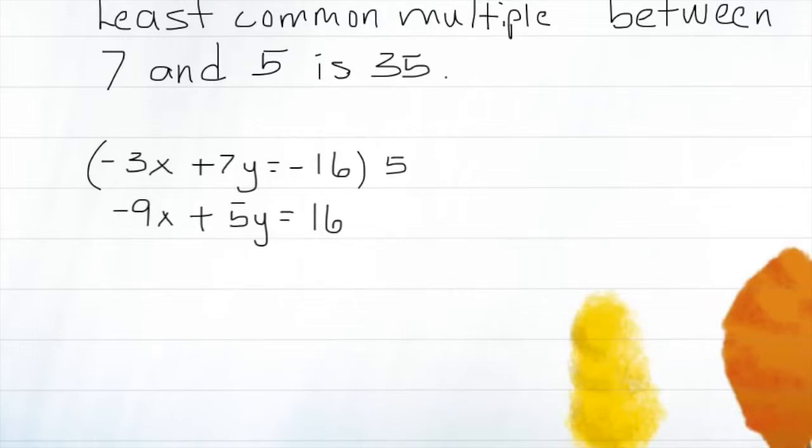It's so easy, I fly right through it, it's so breezy. We start out by looking at the coefficients. Multiply it and eliminate the insufficient.